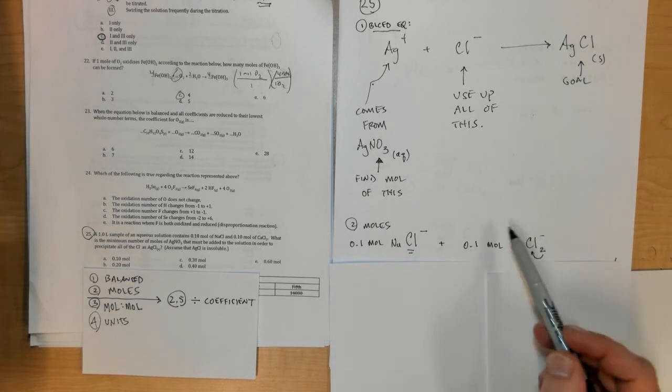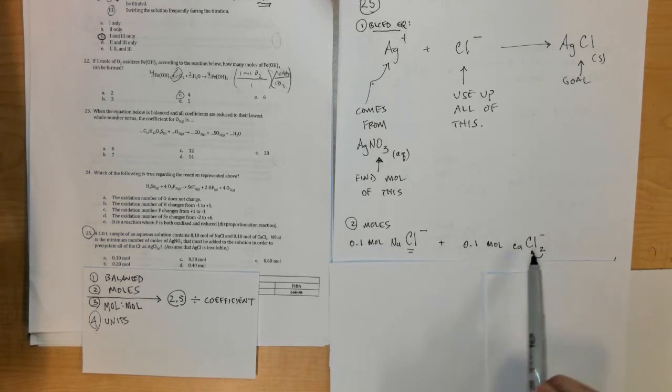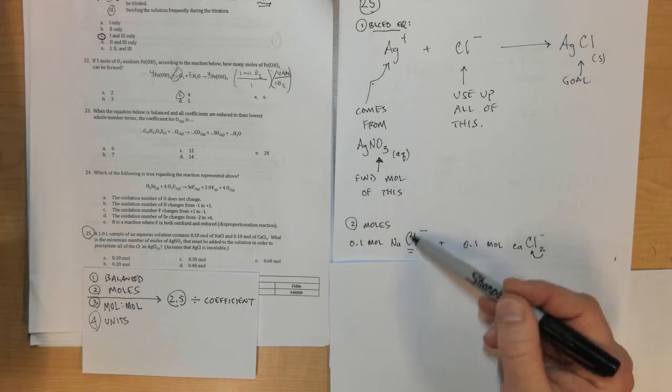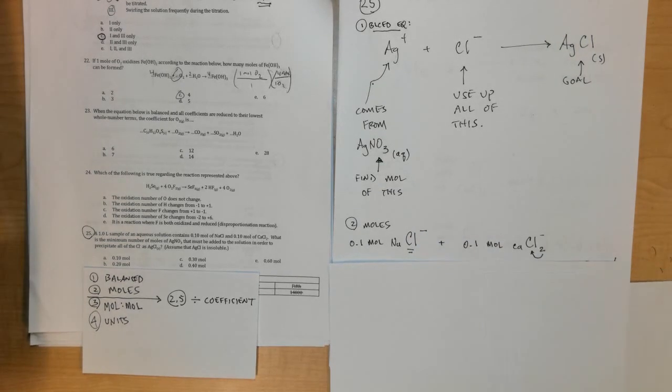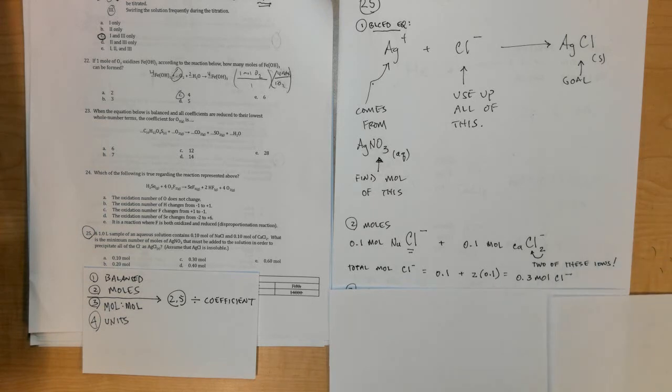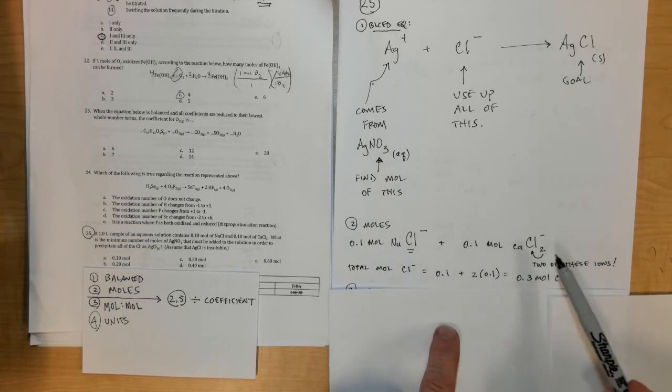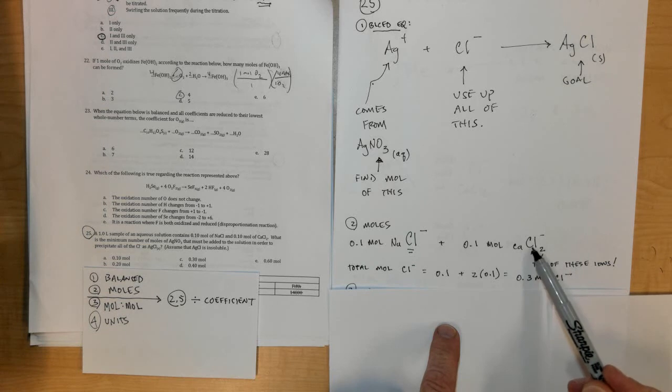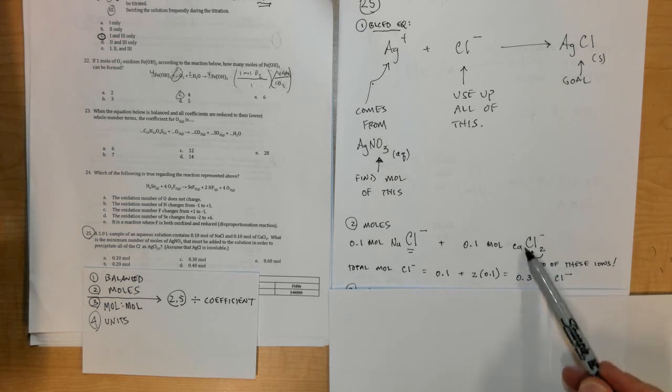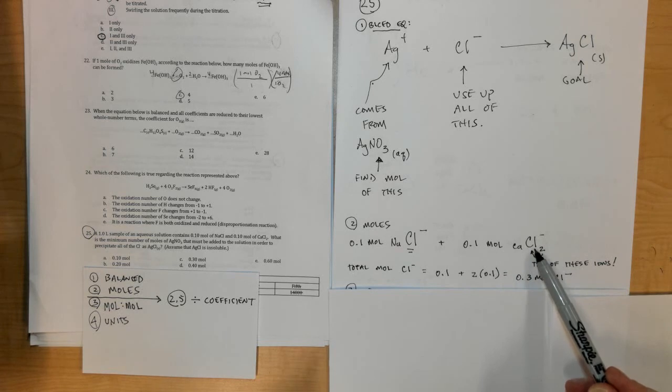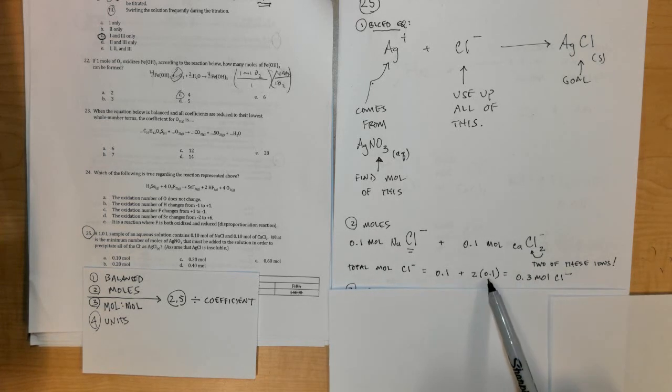Both are sources of chloride ion. Notice how I highlighted the Cl minuses that are inside of each one of them, and so the total moles of chloride ion would be 0.1 from the NaCl and 0.1 times two from the CaCl2. Notice how it's a two down here, so when this dissociates you're going to get two Cl minuses. Add those together: 0.1 plus 0.2 gives you 0.3 moles of Cl minus that needs to be precipitated.